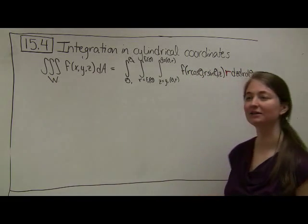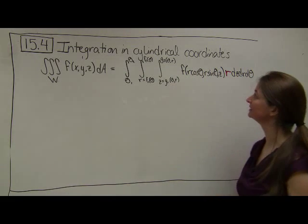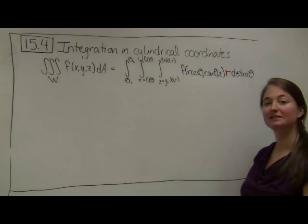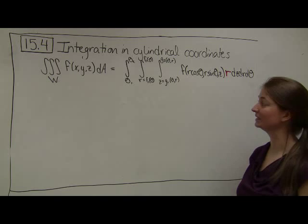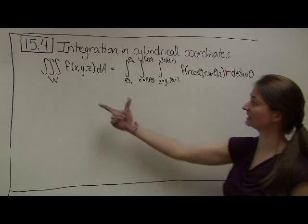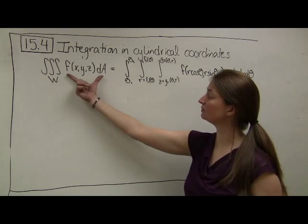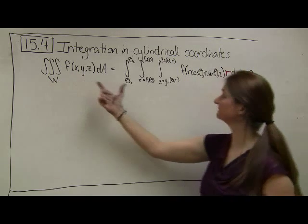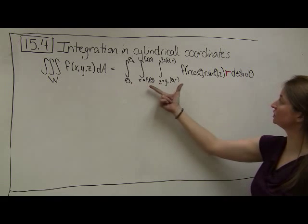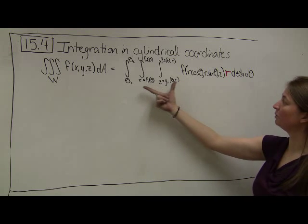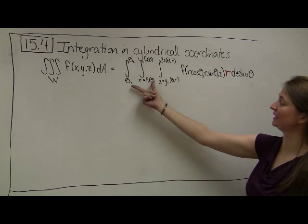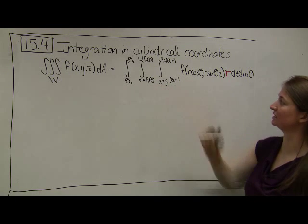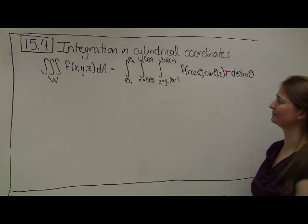Let's look at integration in cylindrical coordinates. In cylindrical coordinates, we find that a triple integral over some volume can be converted into polar coordinates in the x and y coordinates, and then we leave our z coordinates the same.